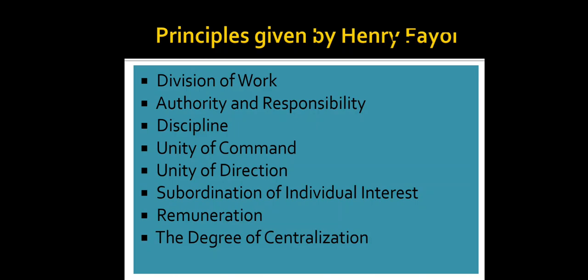The second principle is authority and responsibility. Authority and responsibility go together and are two sides of the same coin. Once you get authority, responsibility comes along with it. For example, if you have been authorized to make all arrangements for a program, it becomes your responsibility to do that work. So authority and responsibility are inseparable — they come together.